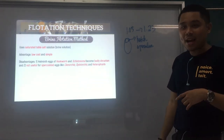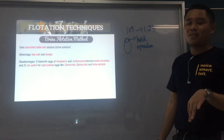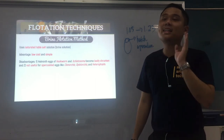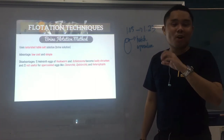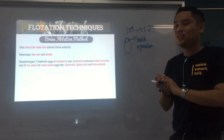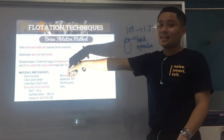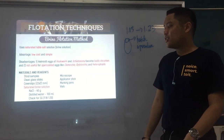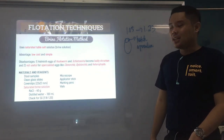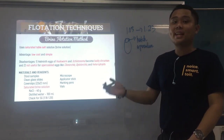Clonorchis — its common name is the Chinese liver fluke or Oriental liver fluke. Knowing the common names of your parasites is very important — there will be points on the board exam. Now for the materials and reagent: the main reagent is your saturated brine solution — NaCl is 40 grams and distilled water is 100 ml. You need to check for SG, which should be between 1.18 to 1.20.